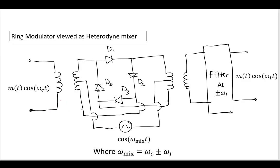Likewise, you could use the ring modulator as a heterodyne mixer, where instead of having just the message, you pass in the modulated message as your signal, pass in the mix wave as the controller for the diodes, and as long as you have the filter at the intermediate frequency, you're going to get a modulated wave at your intermediate frequency.